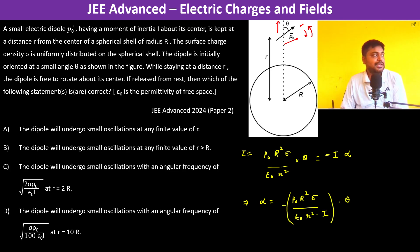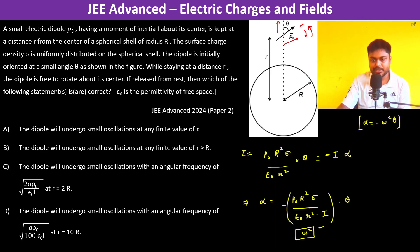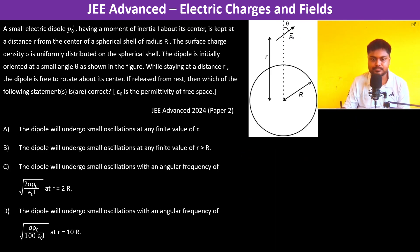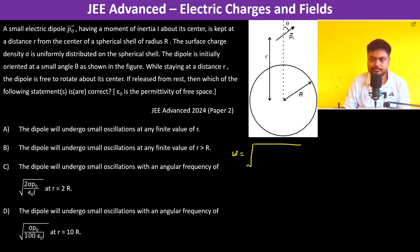Recalling SHM, α = −ω²θ. So this entire coefficient becomes ω². Therefore, ω = √(p₀R²σ / (ε₀r²I)).